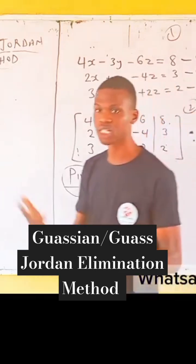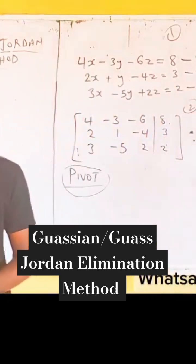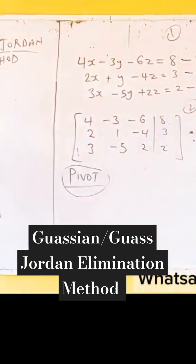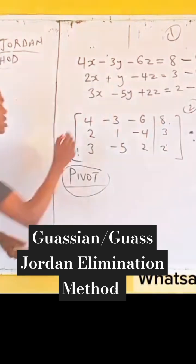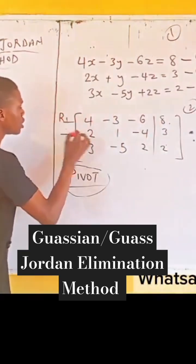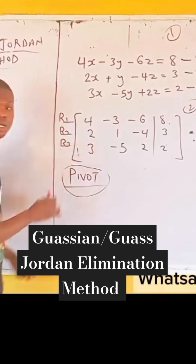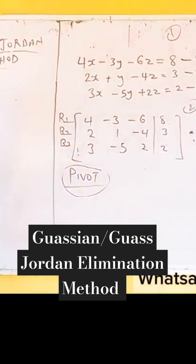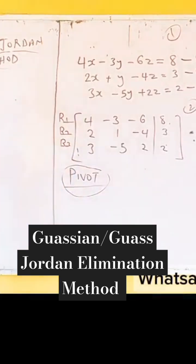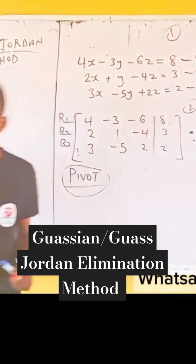By definition, what is a pivot? It is the non-zero leading entry in a row. This is row 1, this is row 2, and this is row 3. For row 1, we have a pivot. Row 2, we have a pivot. Row 3, we have a pivot. But the question is, how do I identify this pivot?